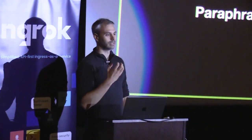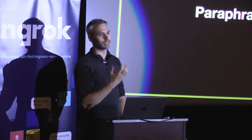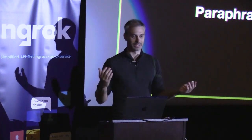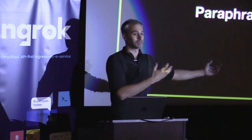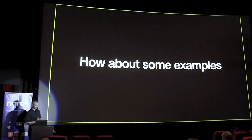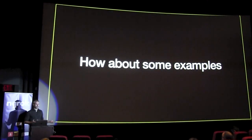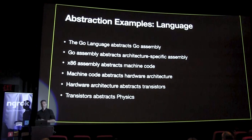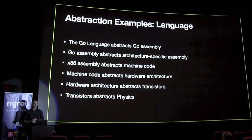That definition is still kind of abstract, so one helpful way to look at it is with concrete examples, because abstractions are everywhere in all the software that we build. One good example is your language toolchain, the compiler. The Go language itself is an abstraction of Go assembly code, which is an abstraction on top of architecture-specific assembly code. Even that architecture-specific assembly code is really an abstraction for machine code, which is an abstraction for hardware architectures, which is an abstraction for electronics, and then literally physics underneath it.